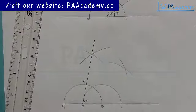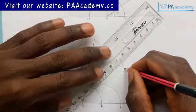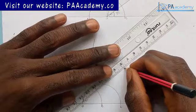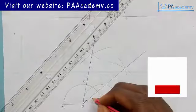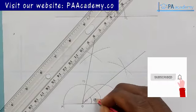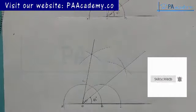From the point of intersection, if you join it to point O, with that, this particular angle here will be your 40 degrees.